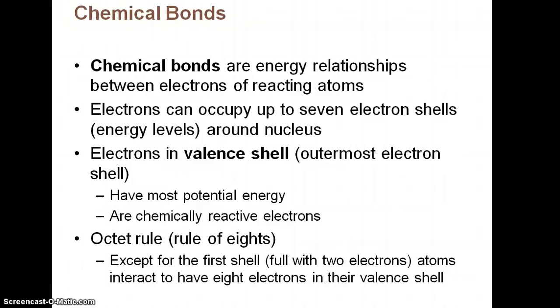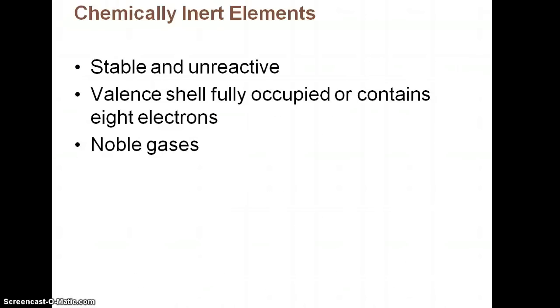So let's review chemical bonds. A chemical bond is an energy relationship between electrons of reacting atoms. If you remember back to chemistry, you talk about the electron shells and valence electrons and all that. Basically, that's going to determine whether or not an atom is going to be reactive or unreactive in order to form chemical bonds with other atoms. The octet rule is a rule of eight. So except for the first shell, all those other valence shells are going to want to have eight electrons to be in its happy place and be full so it would not actually bond with other things. A chemically inert element is going to be one that has its valence shell completely full with all eight electrons. The only ones that fall within this are your noble gases.